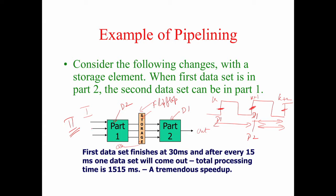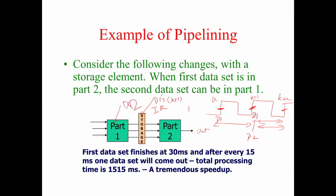D1 enters at clock k. At clock k+1, D1's intermediate result is stored and D2 enters. Between k+1 and k+2, D1 is processed in Part 2 while D2 is processed in Part 1. At clock k+2, D3 enters and D2's intermediate results are stored. Between k+2 and k+3, D2 is processed and D3 is processed. This is how the data can flow.